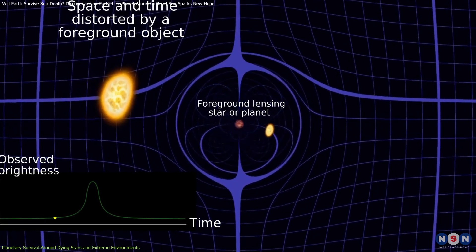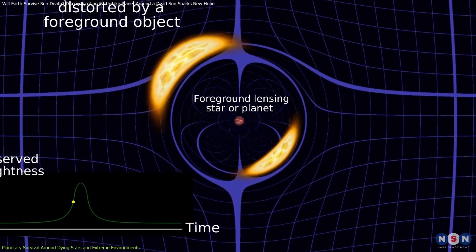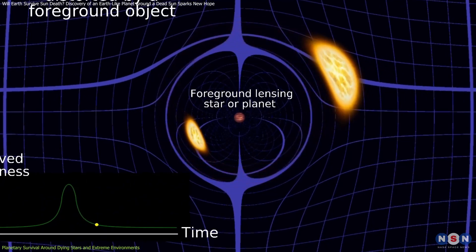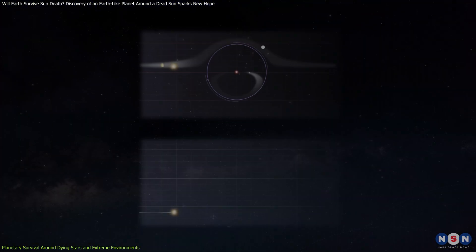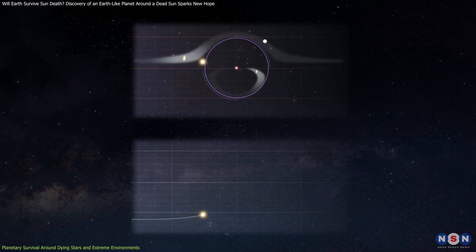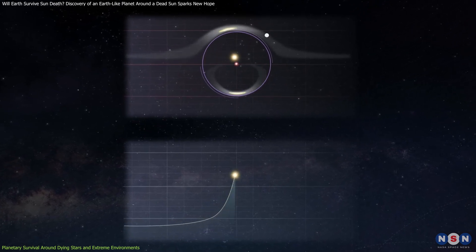When a star or planetary system passes in front of a more distant star, its gravity bends and amplifies the background star's light, acting as a natural magnifying glass that reveals hidden planets and other celestial bodies.